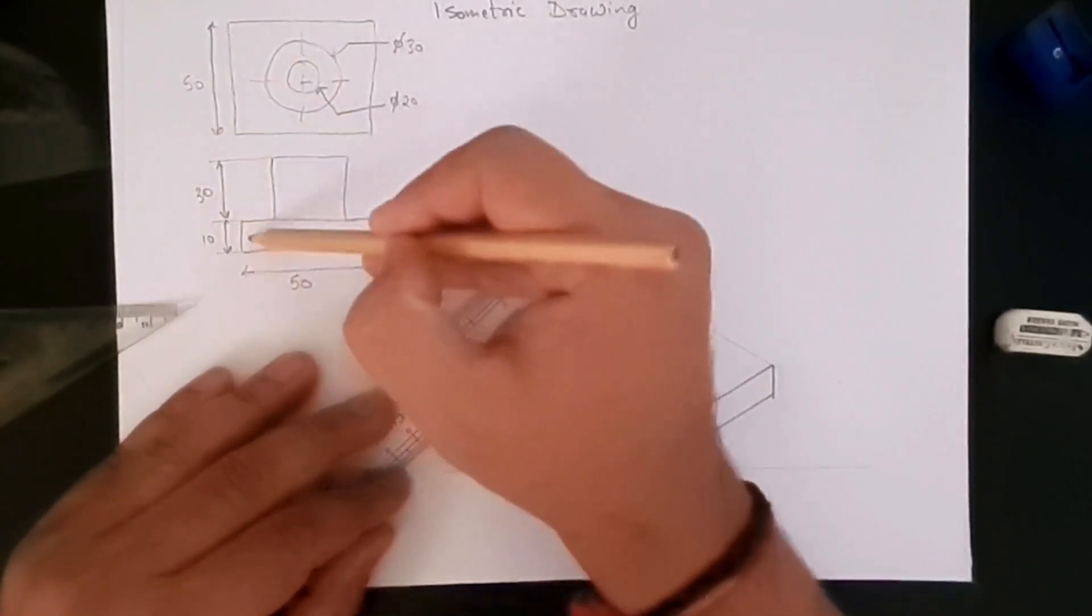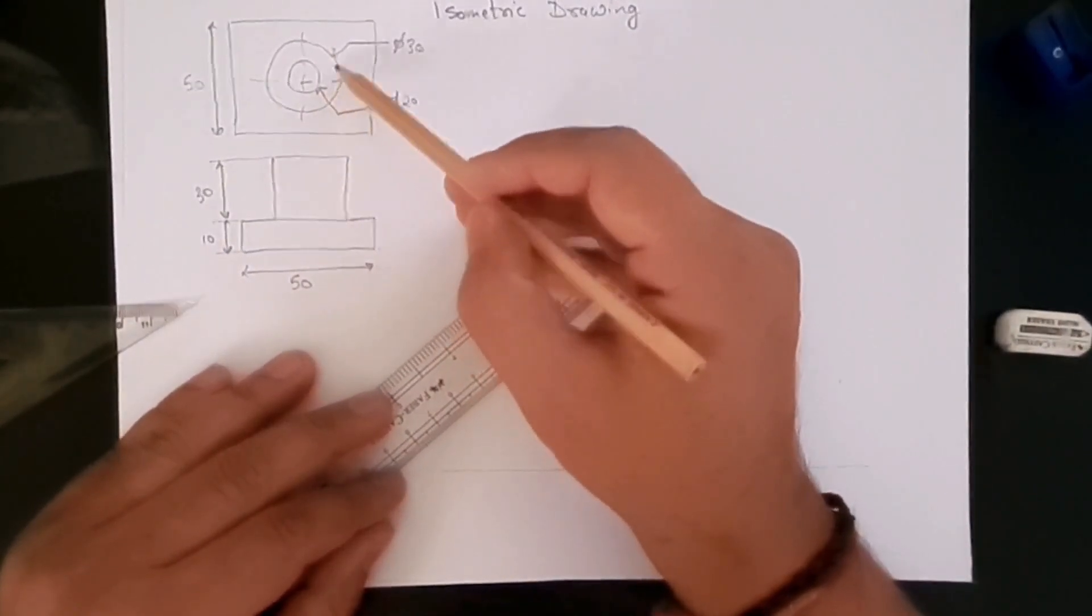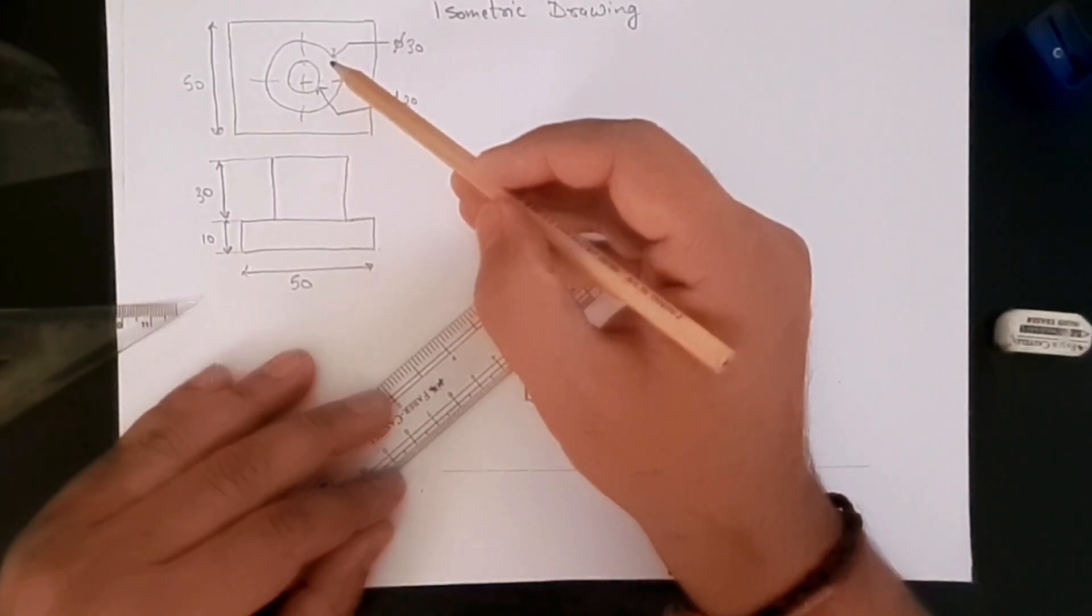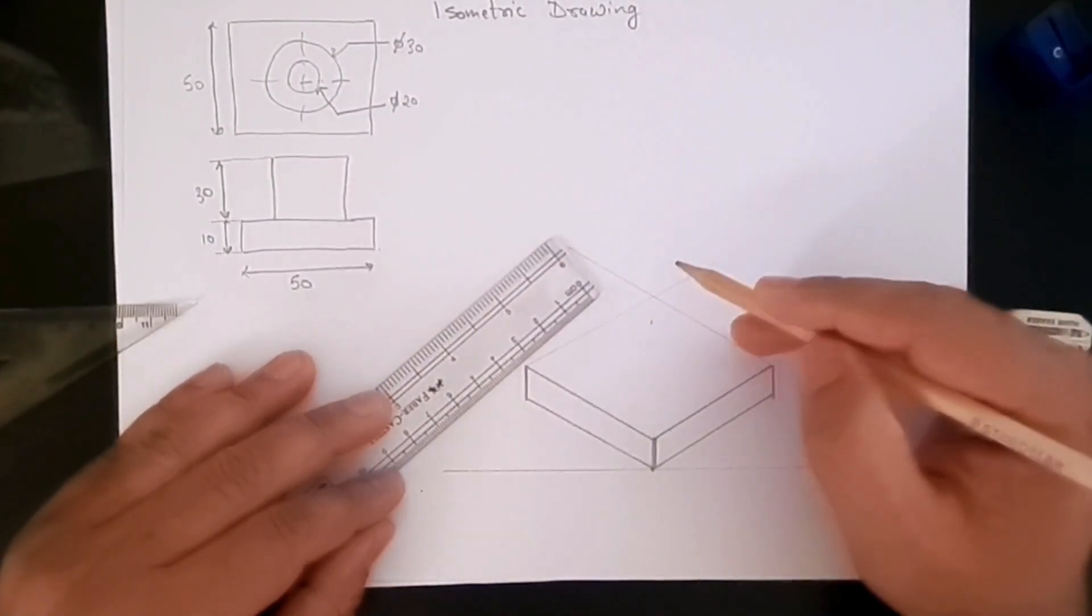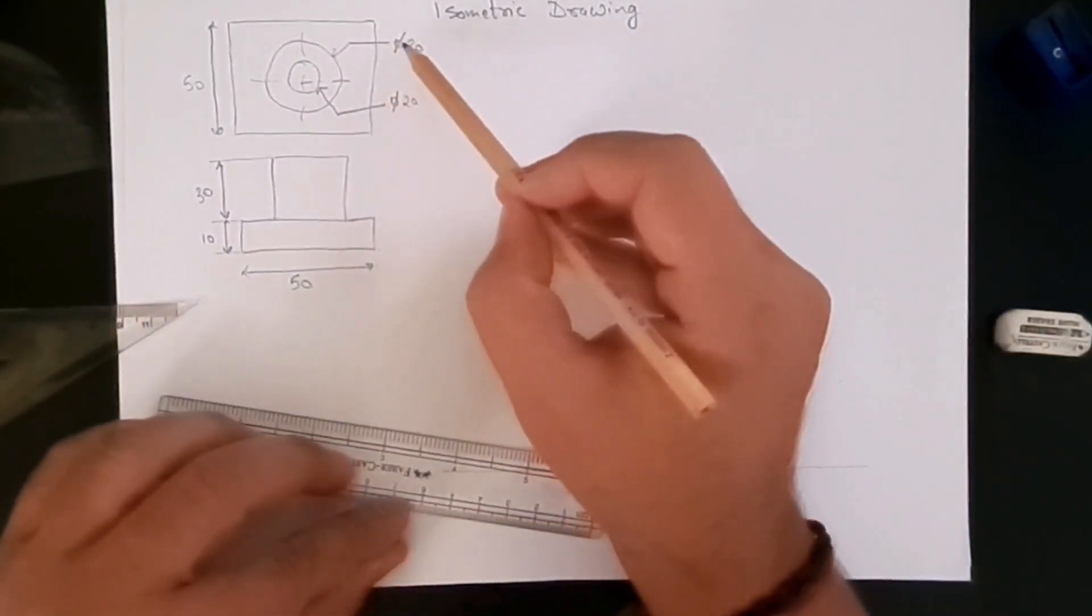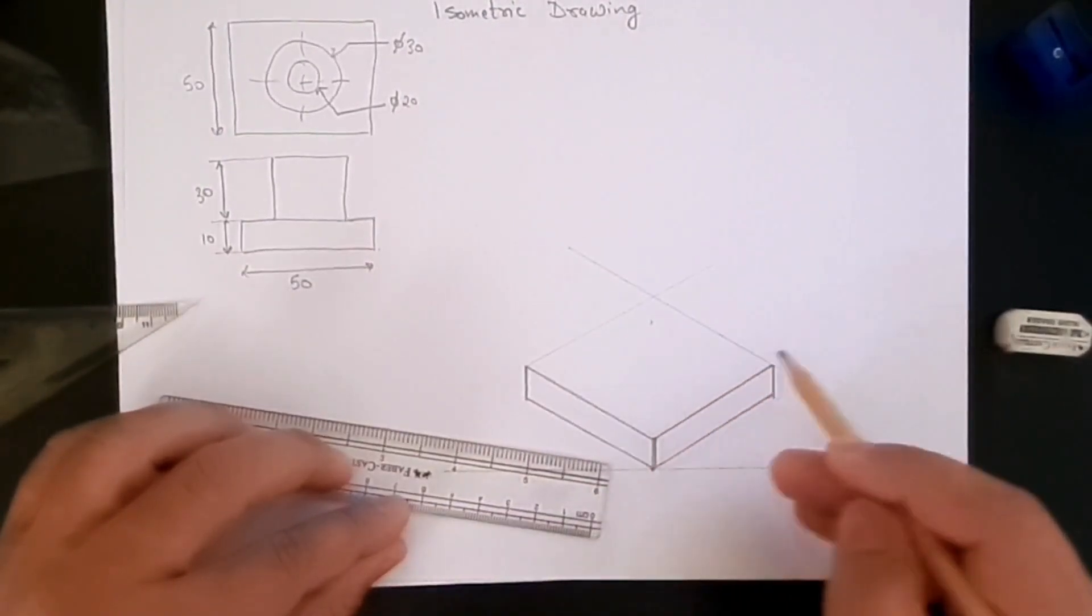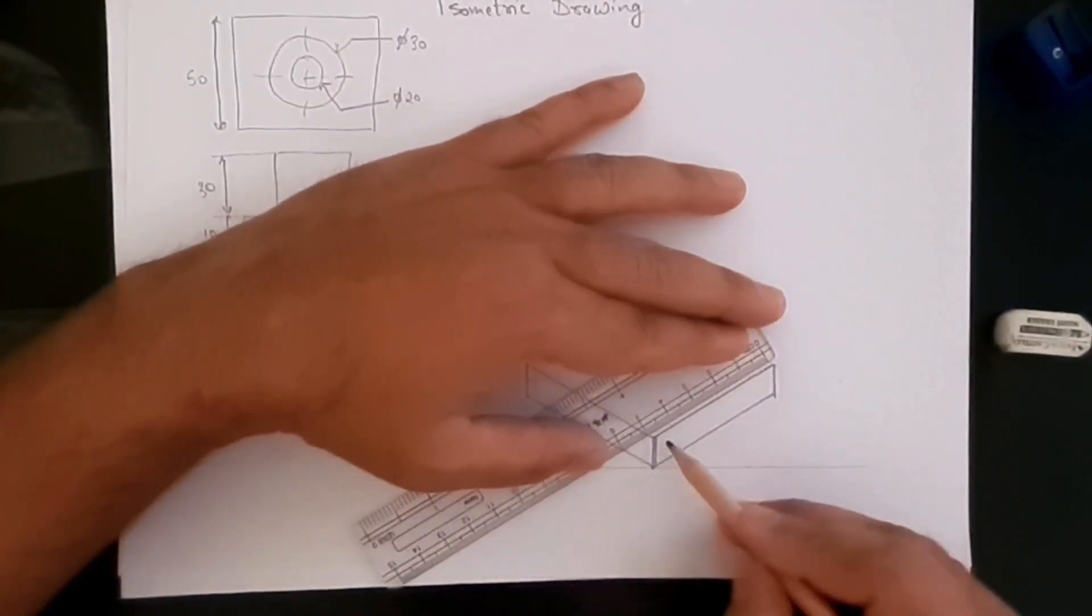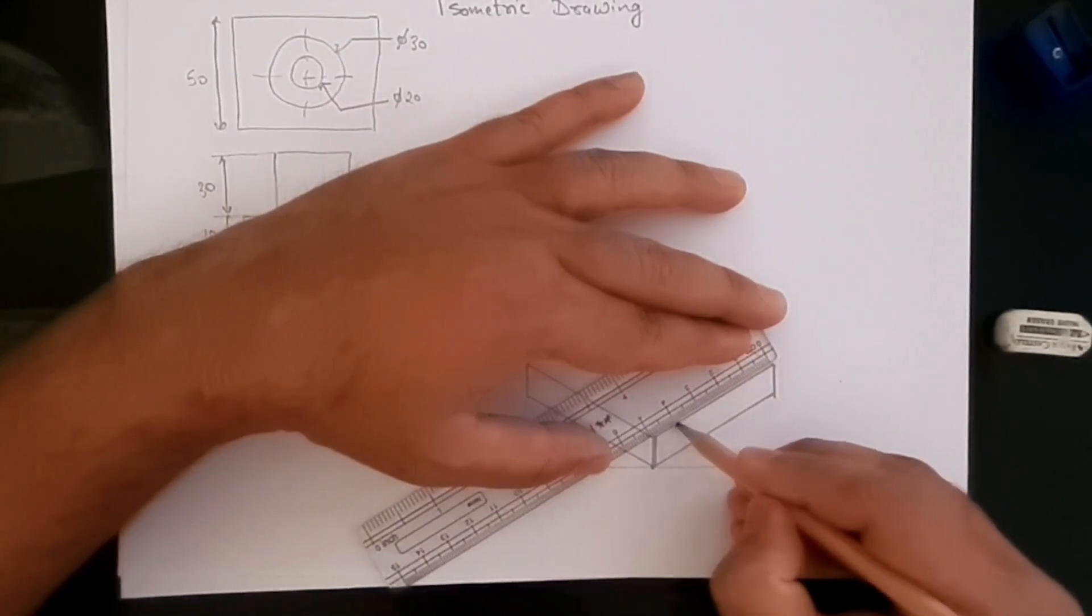Again, this one is for later. So now this base has been created, this 50 by 50 with the thickness. Now let's start creating this. Now this diameter is 30 millimeters, and we have previously learned how to create isometric circles in the previous videos. If you haven't watched them, I would suggest you go and watch those videos first and then come back here.